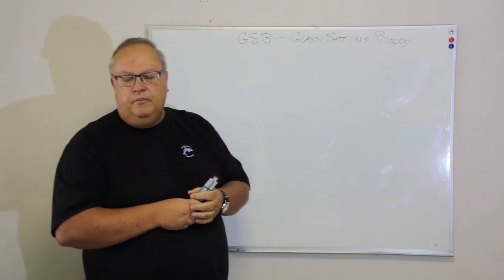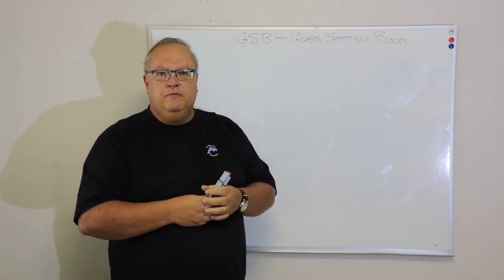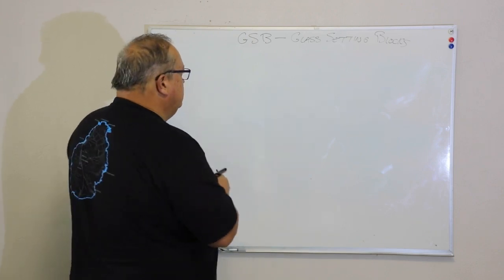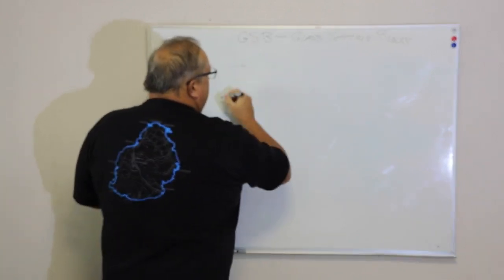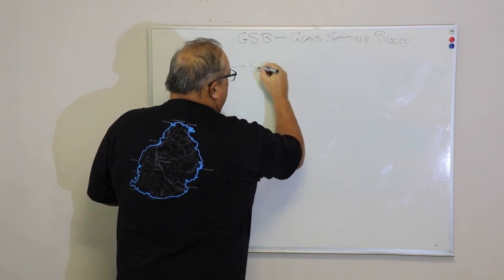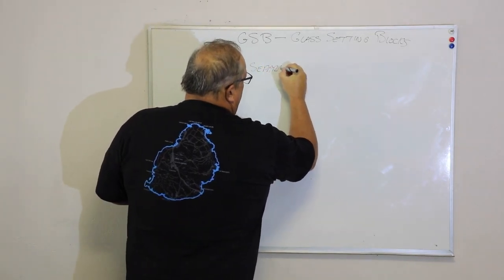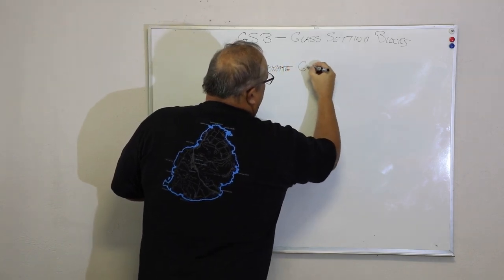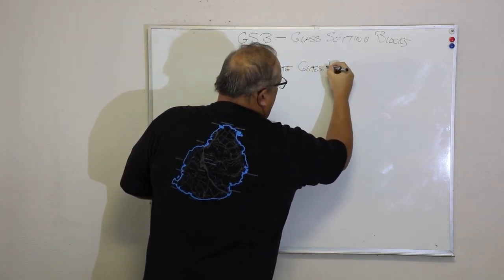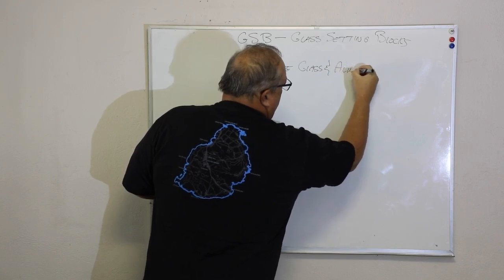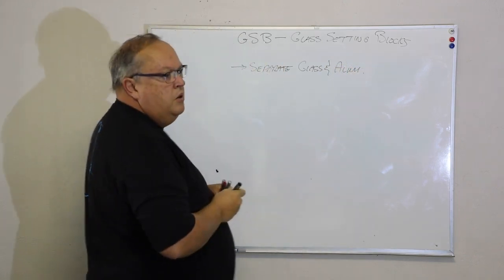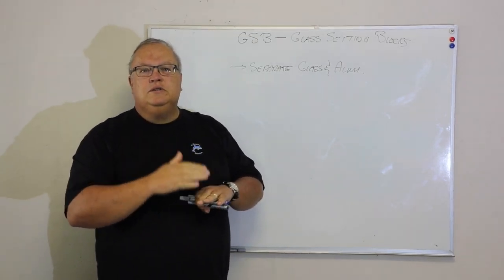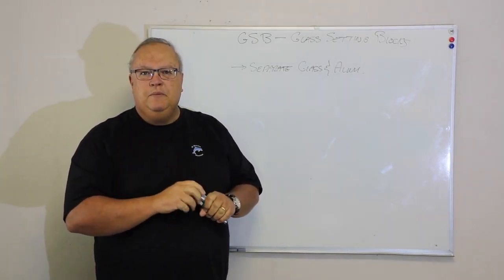What then is the purpose of that glass setting block? Well, that glass setting block has actually got three functions. The first function is to separate the glass and the aluminum. By law, your glass is not allowed to touch the aluminum. It has to be kept separate.